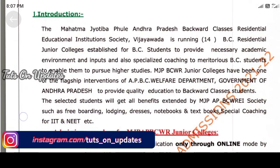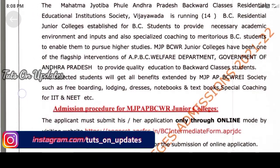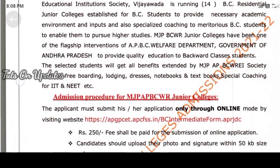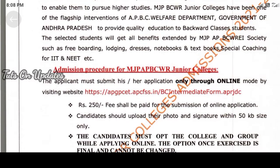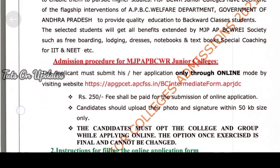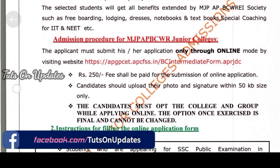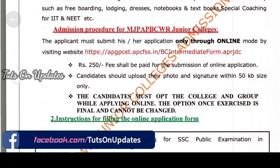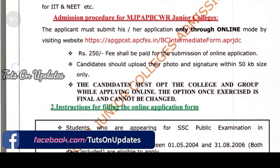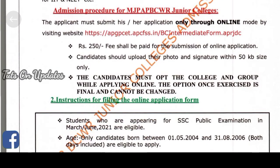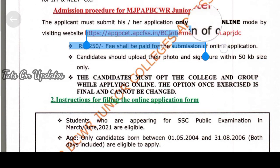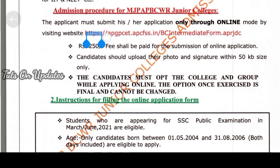Let's start with the link in the description for the online application. If you have the application fee, you can pay the application fee. You can upload a photo and signature in 50KB size. Once ready, you can select the college and group.